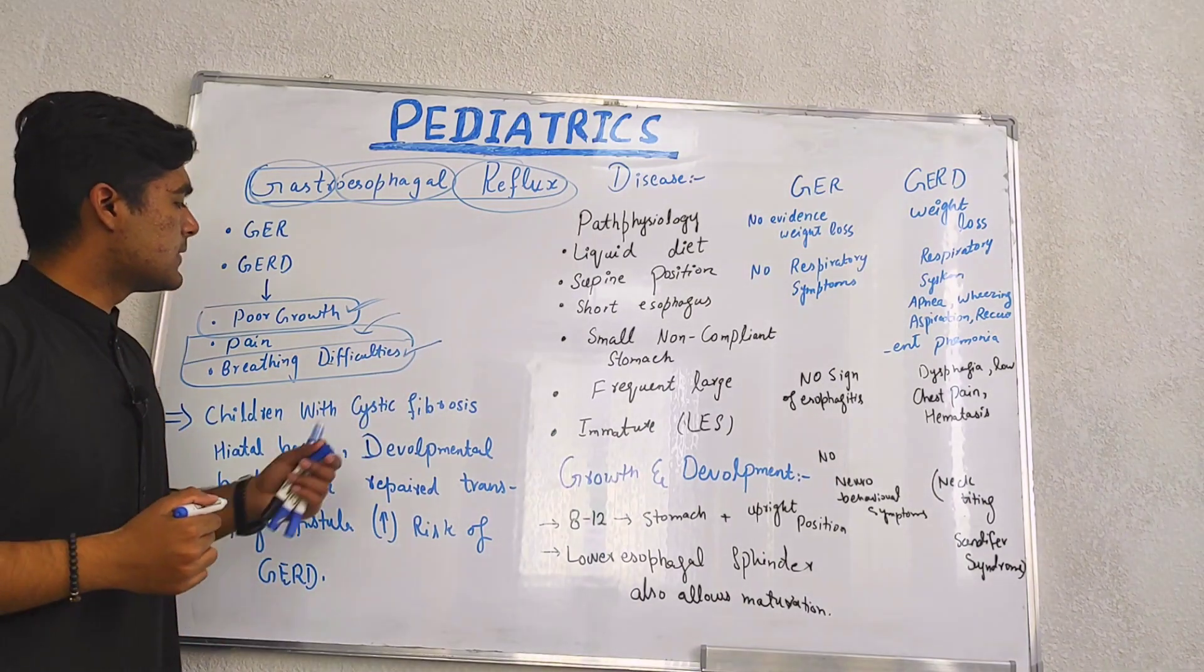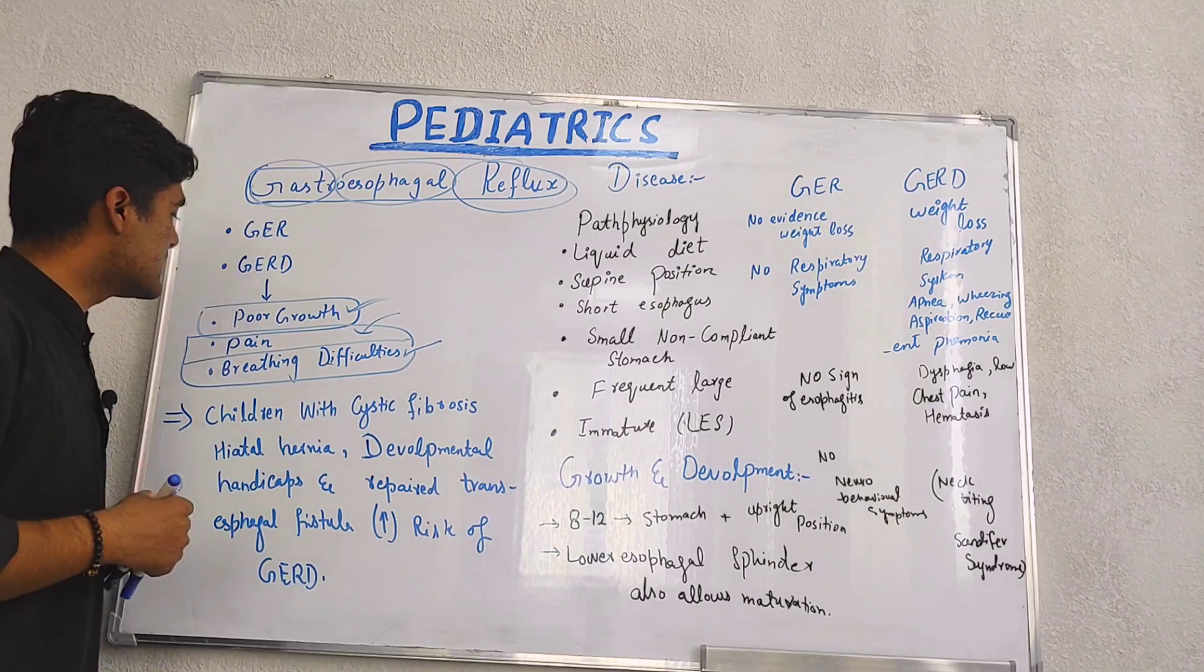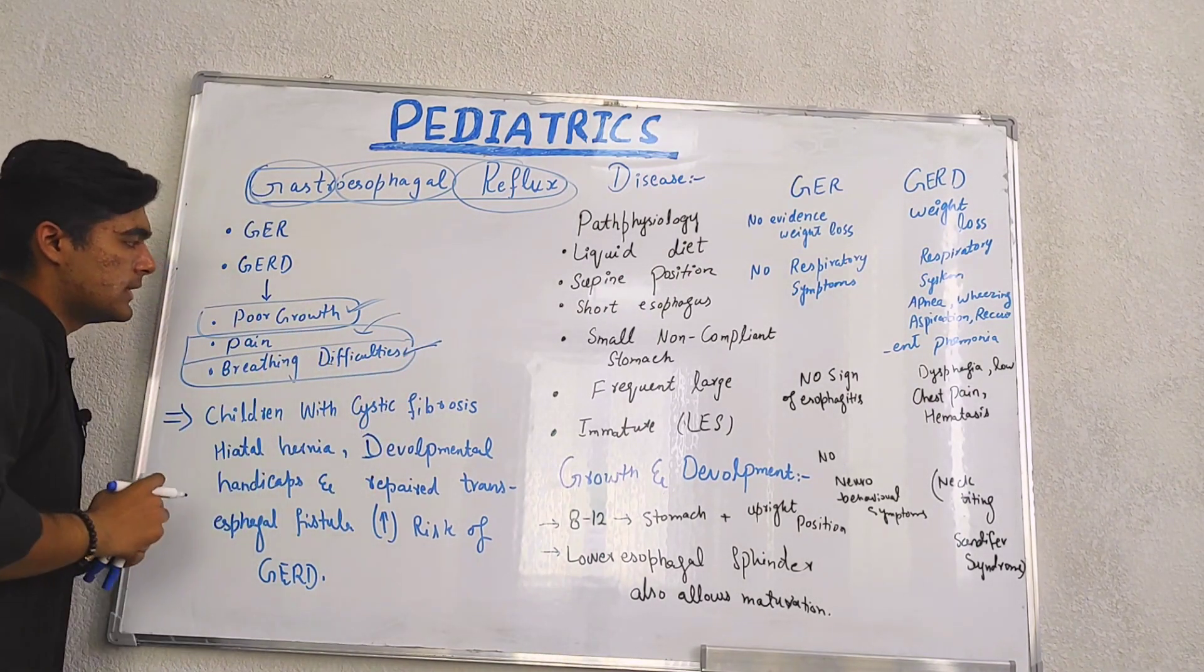Pain is basically due to histamine. In the same way, breathing difficulties and poor growth occur due to gastroesophageal reflux disease.